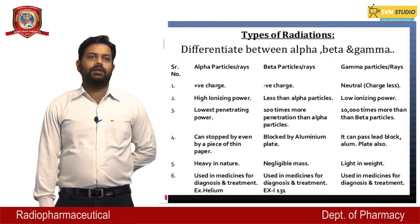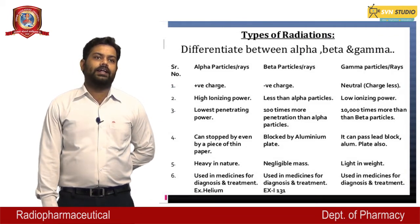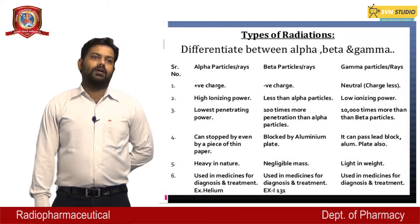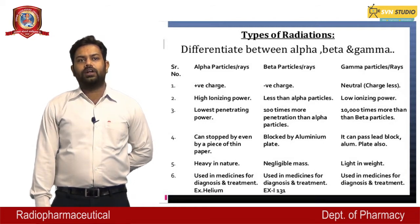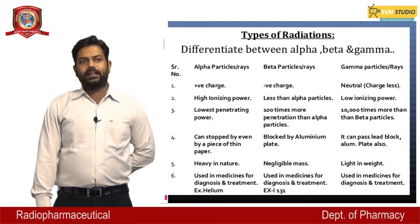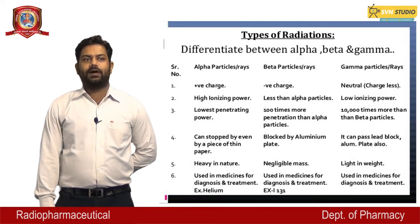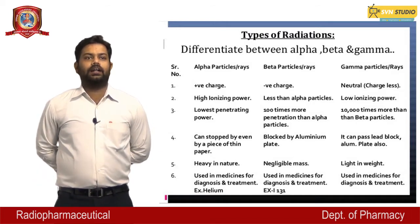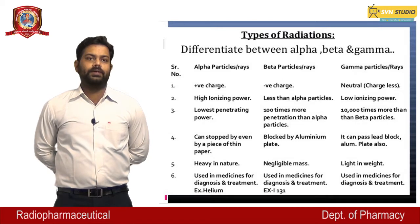Types of radiation: alpha, beta, and gamma. Alpha particles are positively charged, beta particles are negatively charged, and gamma particles are neutral. Alpha particles have high ionization power; beta particles have less than alpha; gamma particles have low ionizing power. Alpha particles have the lowest penetrating power; beta particles are 100 times more penetrating than alpha; gamma particles are 10,000 times more penetrating than beta particles.